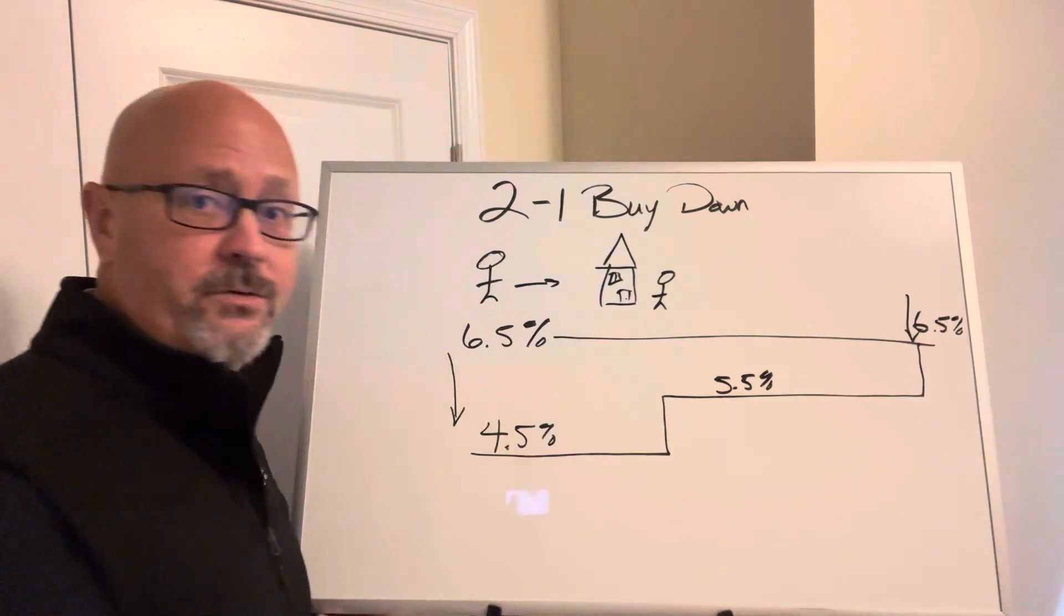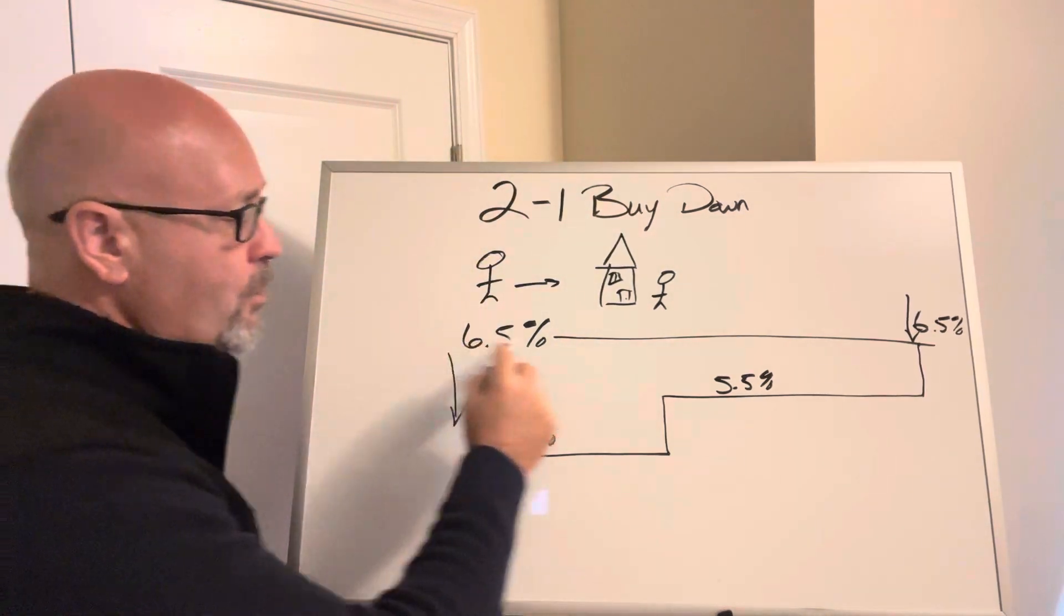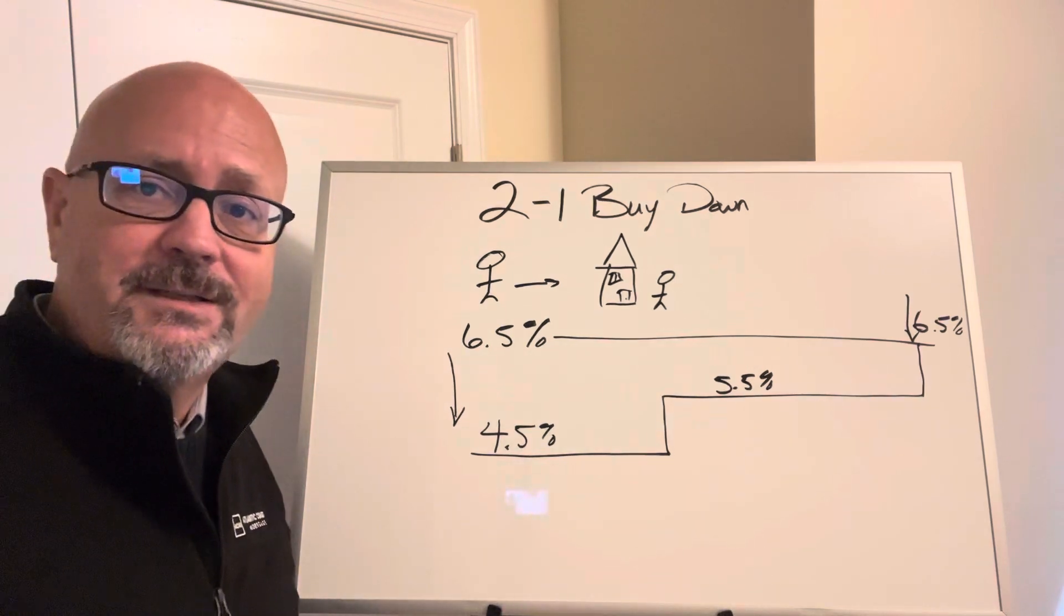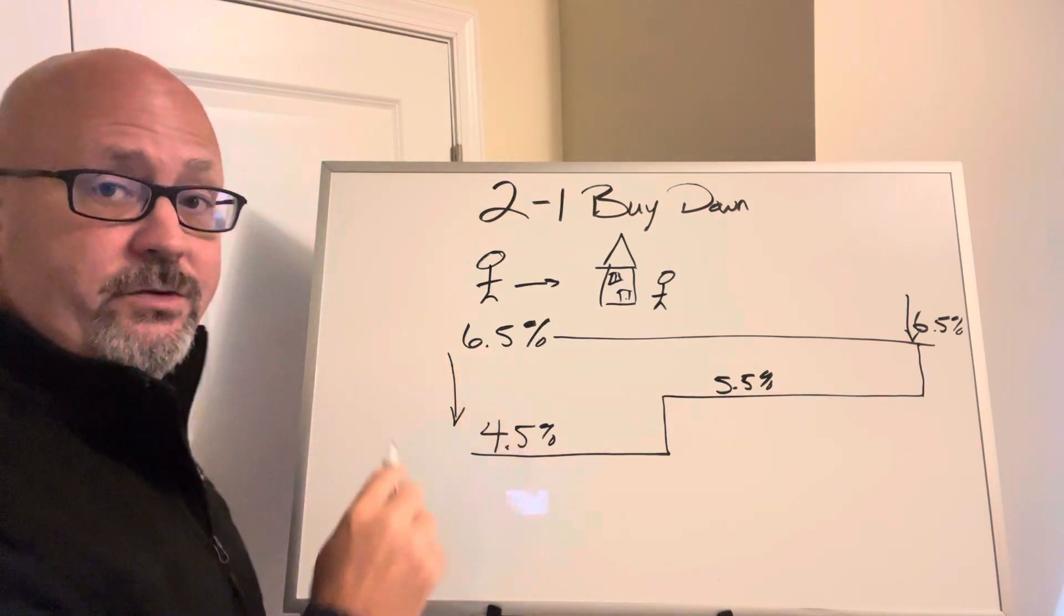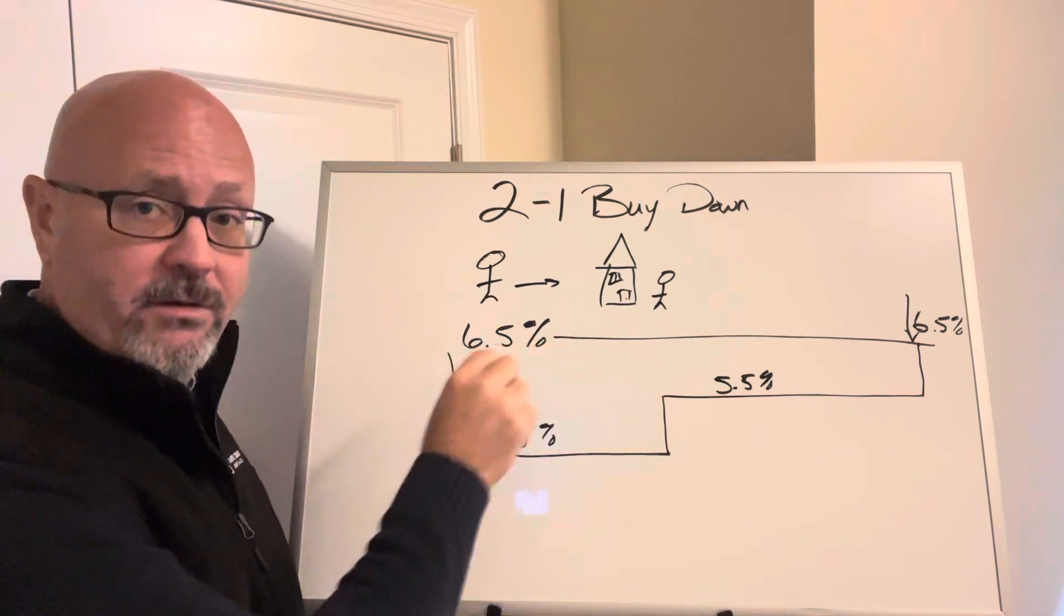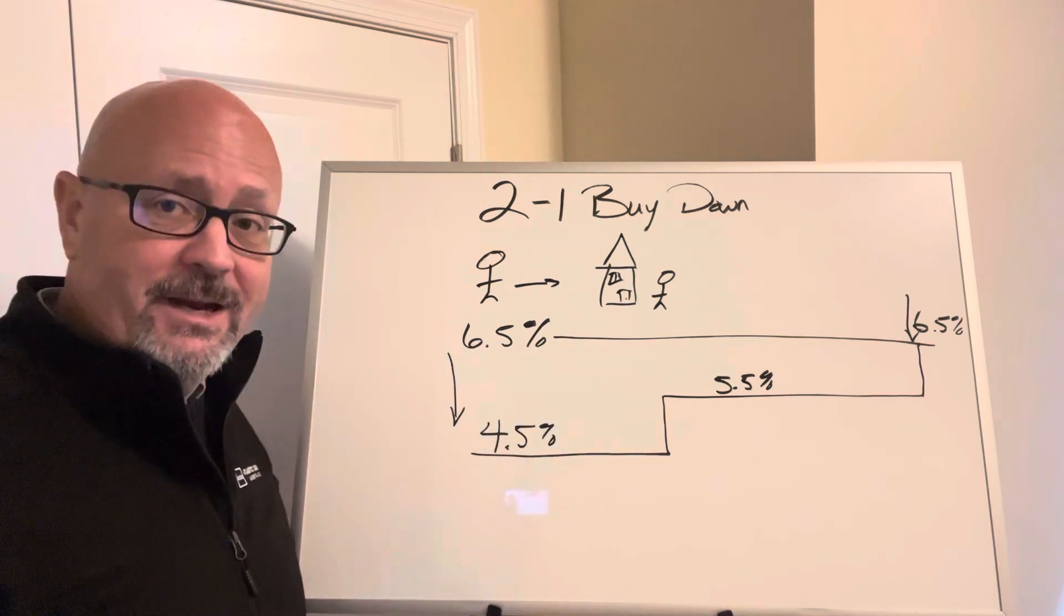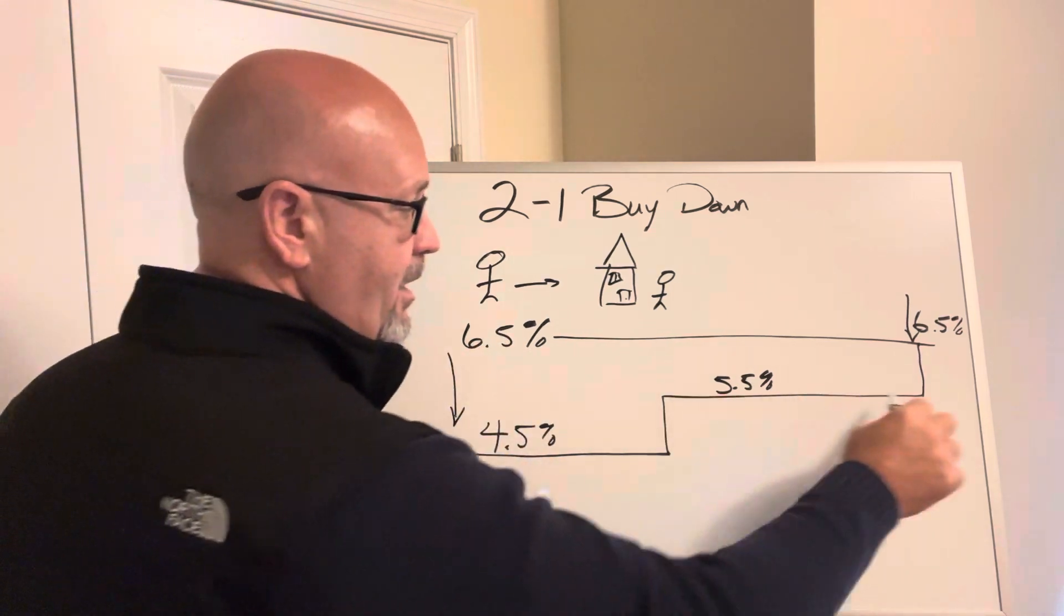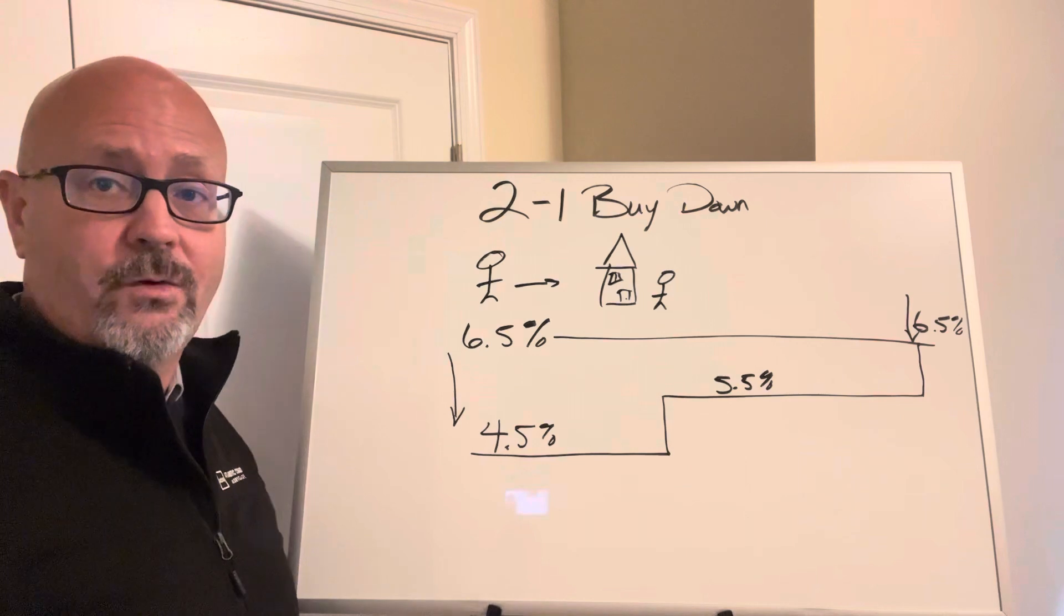So you really need to understand that you have to qualify at that 6.5%. Even though that is something we're trying to help you get out of, you need to make sure that you can feel comfortable, if needed, making that payment at 6.5%, because as you see right here, it is going to stair-step and go up.